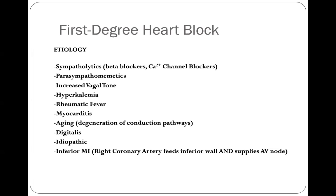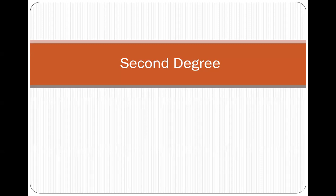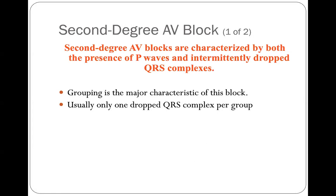Second degree heart blocks are characterized by P-waves that cause QRS complexes and some P-waves that do not have corresponding QRS complexes — the QRS is dropped. They typically appear in groups, where you might have three P-waves with QRS complexes then one without, or two P-waves with QRS complexes followed by one without, in a consistent pattern. Typically only one QRS is dropped in each group.